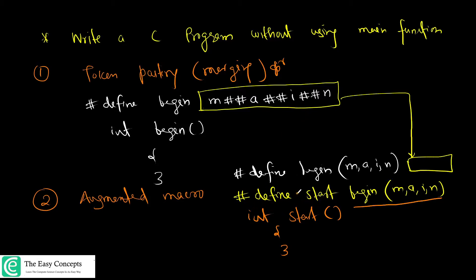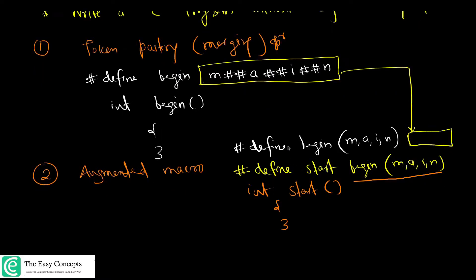The third thing is you can use something like this: #define, which is simplest of these, #define begin and begin will be replaced by main everywhere, and then you can write int begin. So here are three approaches that allow us to write a C program without using main function. This is how the first phase of compilation process works.